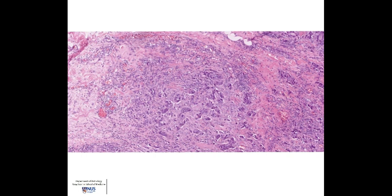At medium power, we can see the architecture more clearly, which is important for grading of the tumour. The tumour appears to be forming tubular structures in a haphazard fashion, surrounded by desmoplastic stroma. This is the classical appearance of a ductal carcinoma. The degree of tubule formation is important in grading of ductal carcinoma.